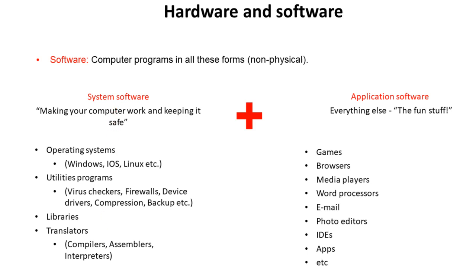If it's not in that list, then it must be application software — and this is essentially the fun stuff. It's all very well having a computer with a great operating system, loads of utilities to keep it safe, and all the libraries and translators it needs, but you need applications to actually use it. This includes everything from games, browsers, media players, word processors, emails, photo editors, integrated development environments like Visual Basic for writing programs, apps on mobile phones, and much more.